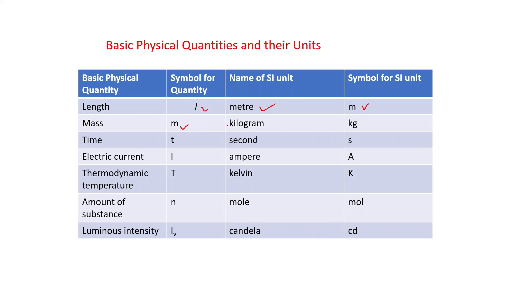Mass, this is small m, unit is kilogram kg, this k is small letter. Time T, unit is second S. Electric current, represented by I, SI unit is ampere, symbol is capital A.